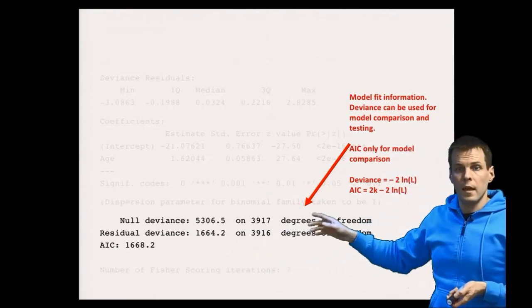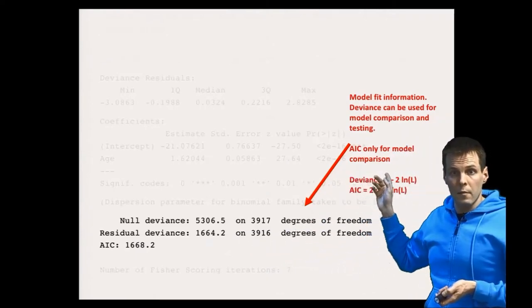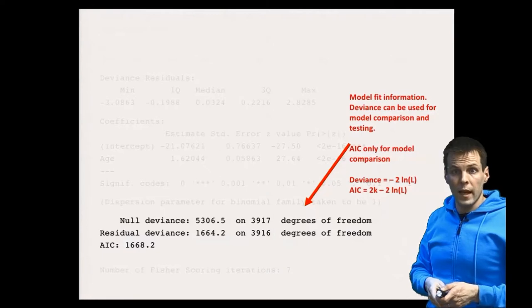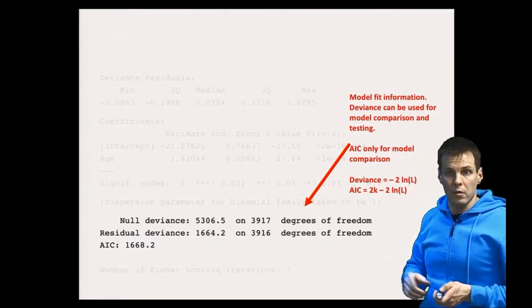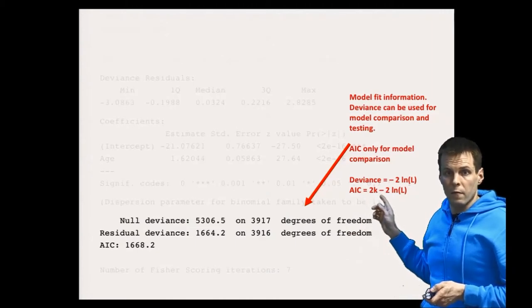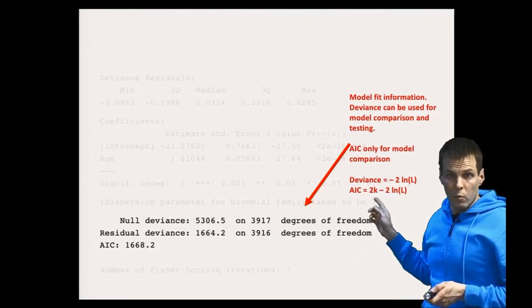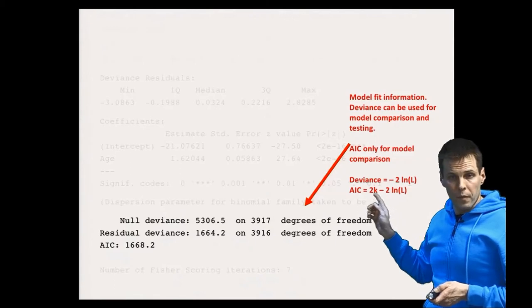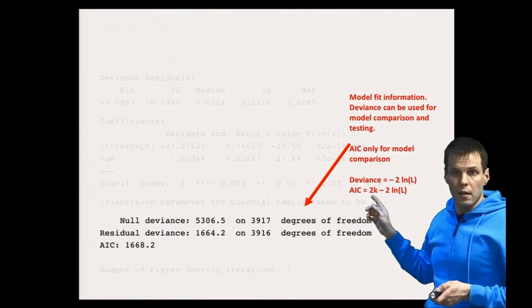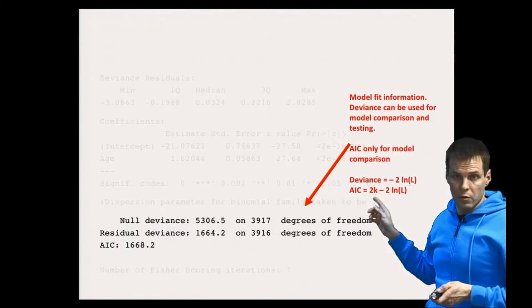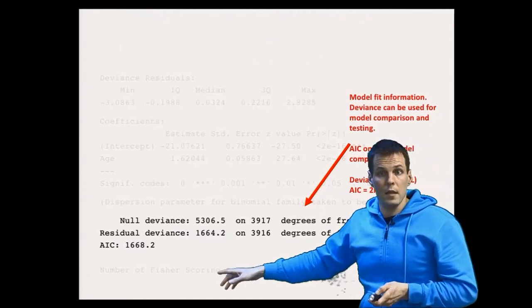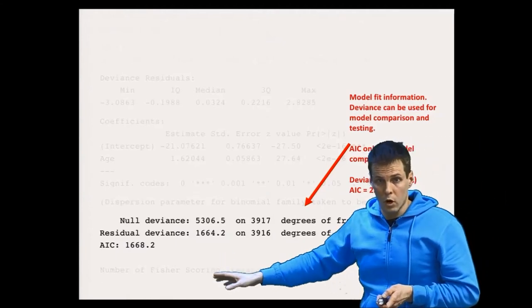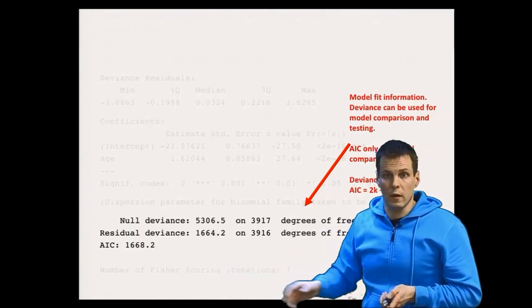Then AIC is similar to adjusted R squared so that it can be used for model comparison. It penalizes the deviance for the complexity of the model. We subtract the number of parameters divided by two from the deviance that gives us AIC, and AIC can be used for comparing two models that are not nested when they are fitted to the same data.